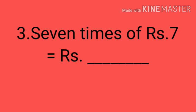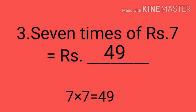Number 3. 7 times of rupee 7 is equal to rupee dash. 7 times — what does times denote? Yes, multiplication. So 7 times of rupee 7 is 7 into 7 equals to 49 rupees.